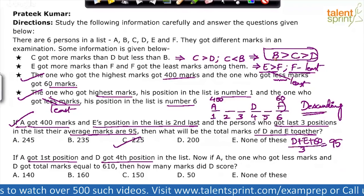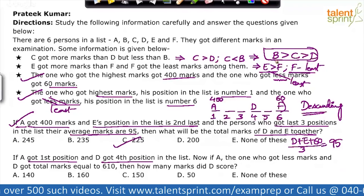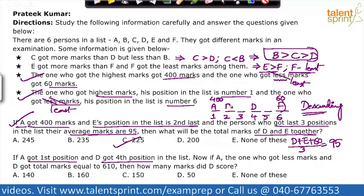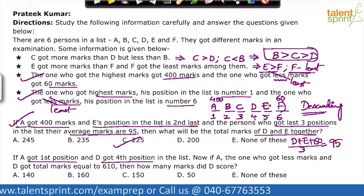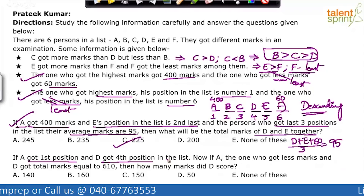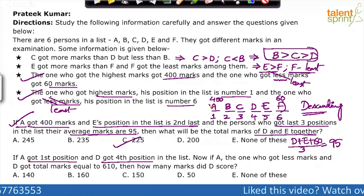We know B > C > D, so B and C must come before D. The only possibility is B in second position and C in third position, and the remaining person E takes fifth position. So even for Question 2, based on A in first and D in fourth, the sequence remains the same: A, B, C, D, E, F — starting from 400 and ending at 60.